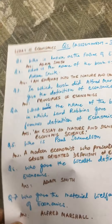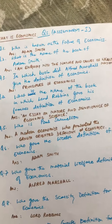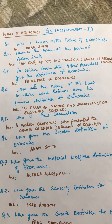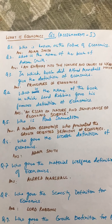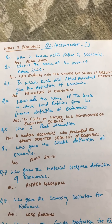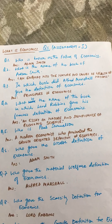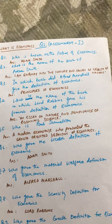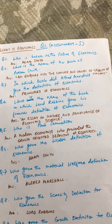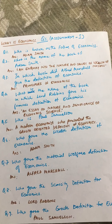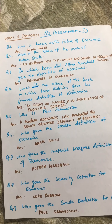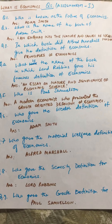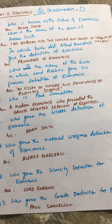Let's also revise Assignment One — answers to the lesson on what is economics. Question one: who is known as the father of economics? That is Adam Smith. Question two: the name of Adam Smith's book is 'An Inquiry into the Nature and Causes of the Wealth of Nations.' Alfred Marshall gave his definition of economics in 'Principles of Economics.' Lord Robbins gave his famous definition in 'An Essay on the Nature and Significance of Economic Science.' Paul Samuelson is a modern economist who presented the growth-oriented definition of economics. Adam Smith gave the wealth definition, Alfred Marshall gave the material welfare definition, Lord Robbins gave the scarcity definition, and Paul Samuelson gave the growth definition.